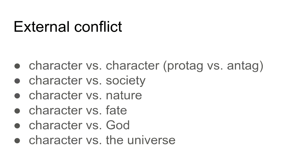The most common example of external conflict is character versus another character. This is where we have the protagonist versus the antagonist. When we have an external conflict between the protagonist and another character, that other character is going to be a secondary character in a short story — that other character is the antagonist, and there may be more than one antagonist. So when we have a conflict that is external, whether primary or not, usually it's going to be a character versus another character.